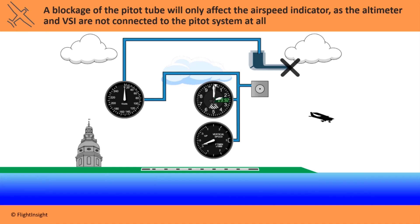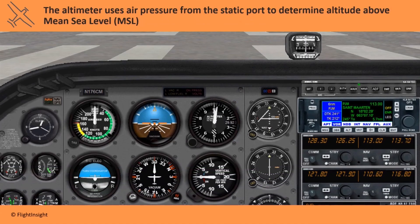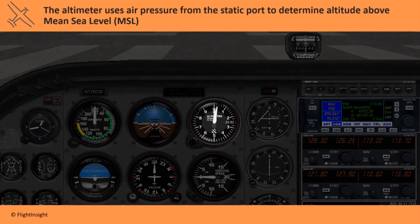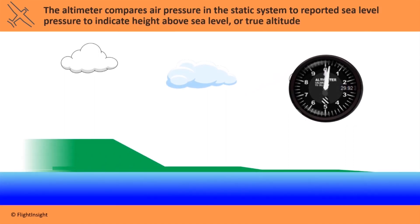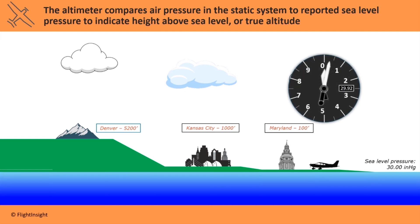The altimeter determines altitude by comparing outside air pressure to known sea level pressure, so it displays altitude above mean sea level. The aircraft's altitude in MSL is called its true altitude. Prior to takeoff, the altimeter is set to a nearby reported sea level pressure. The altimeter should then correctly read the field elevation of the takeoff airport.